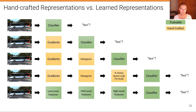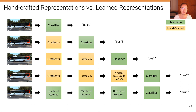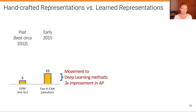Now all these boxes are trainable green boxes. We learn all of the low-level features, which are the early layers in our deep neural network, and the mid-level features and high-level features, which are the later layers, and even the classifier — all one big neural network trained end to end. And this has really led to dramatic improvements in performance.